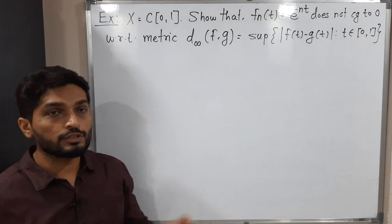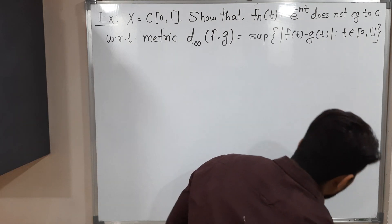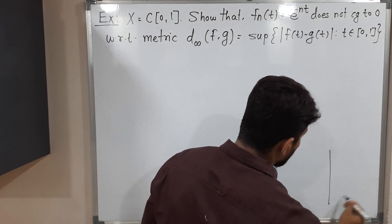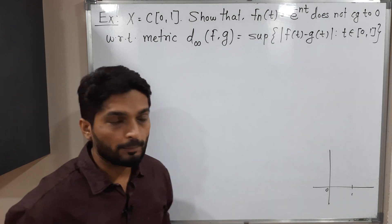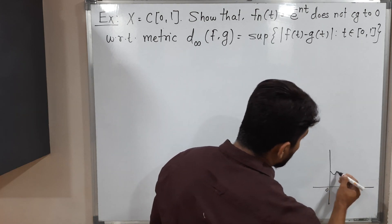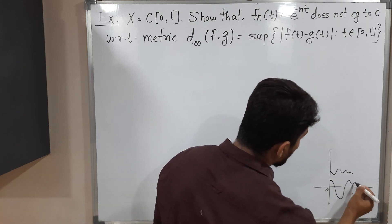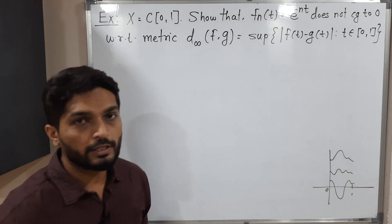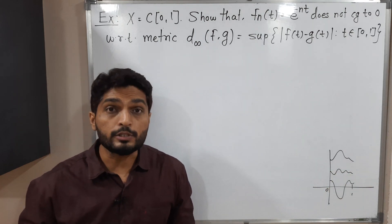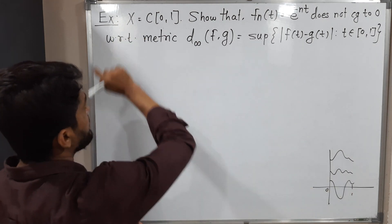X is the set of all continuous functions defined on the closed interval [0, 1]. Let us see. This is the Y axis, this is the X axis, we have the interval [0, 1]. So this is a continuous function defined on closed interval [0, 1]. This is also a continuous function. This is also a continuous function. So the set of all such continuous functions defined on closed interval [0, 1] is our set X.